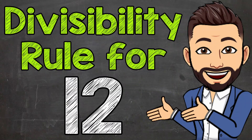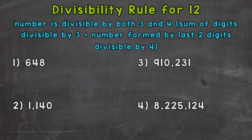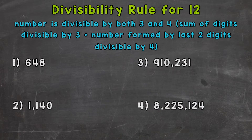Welcome to Math with Mr. J. In this video, I'm going to cover the divisibility rule for 12. Remember, when we're checking for divisibility, we're checking to see if we can divide without getting a remainder, so the given numbers work out exactly.